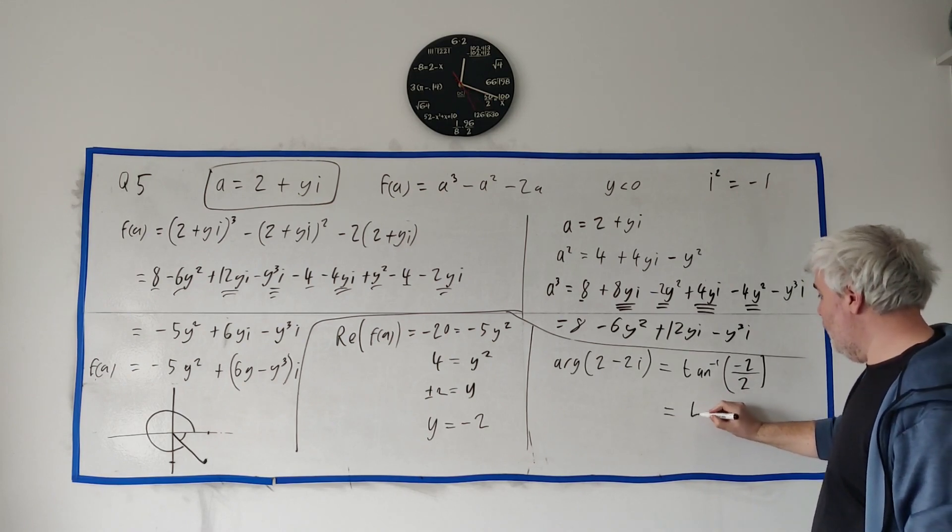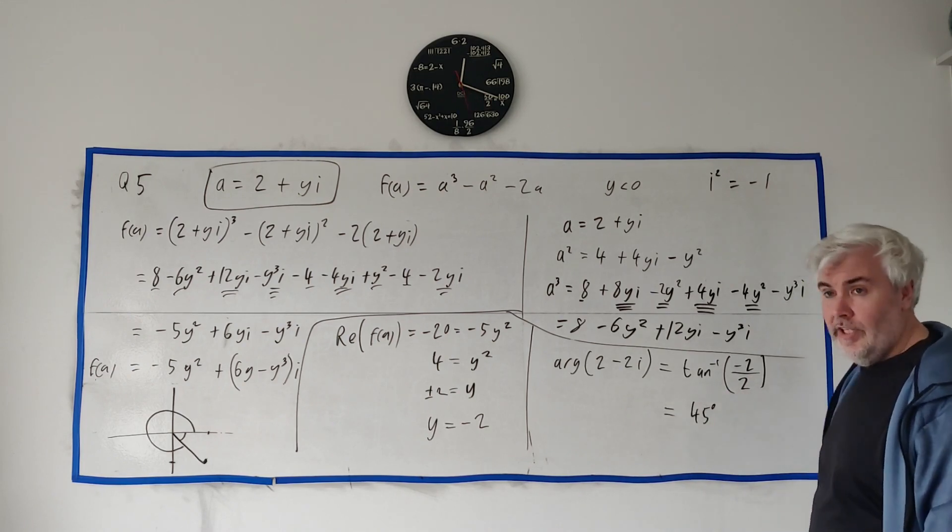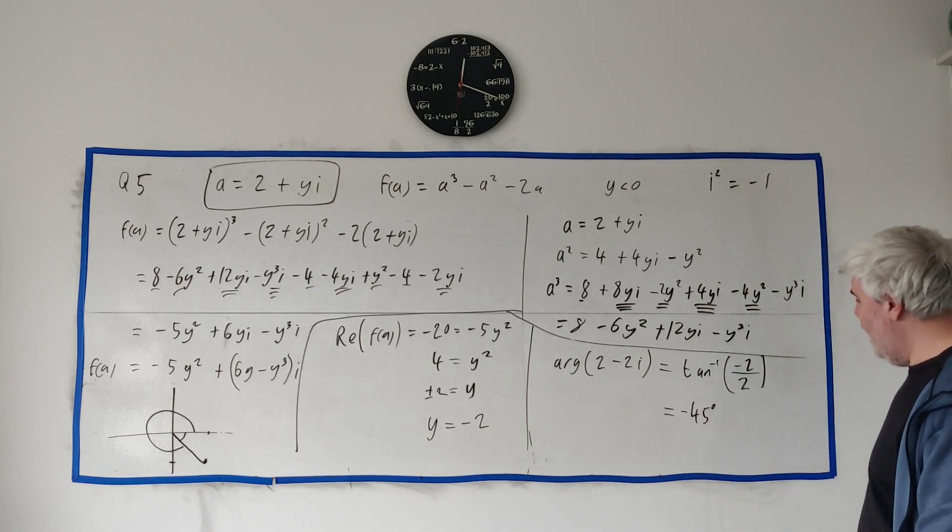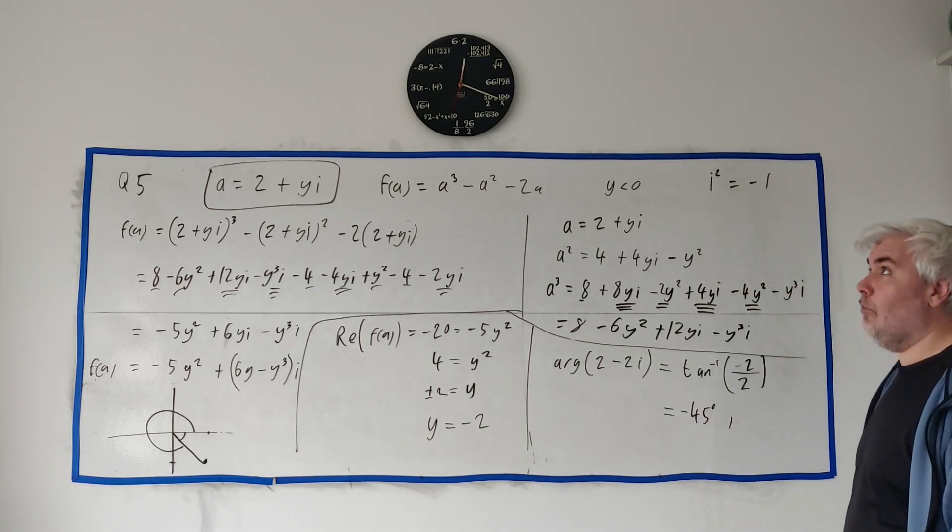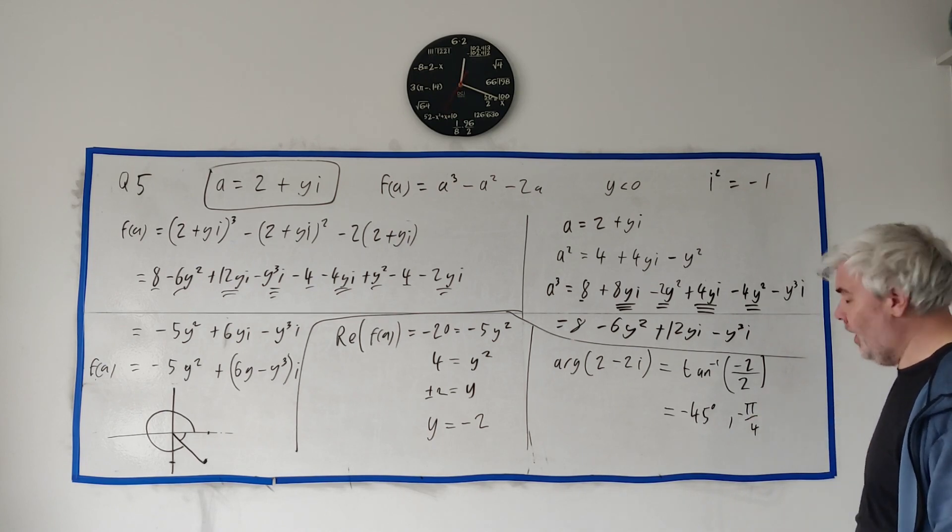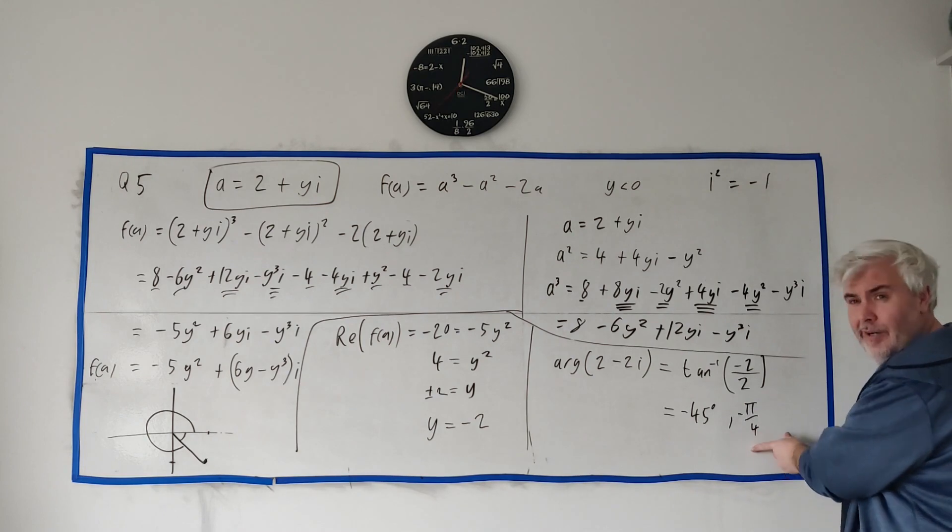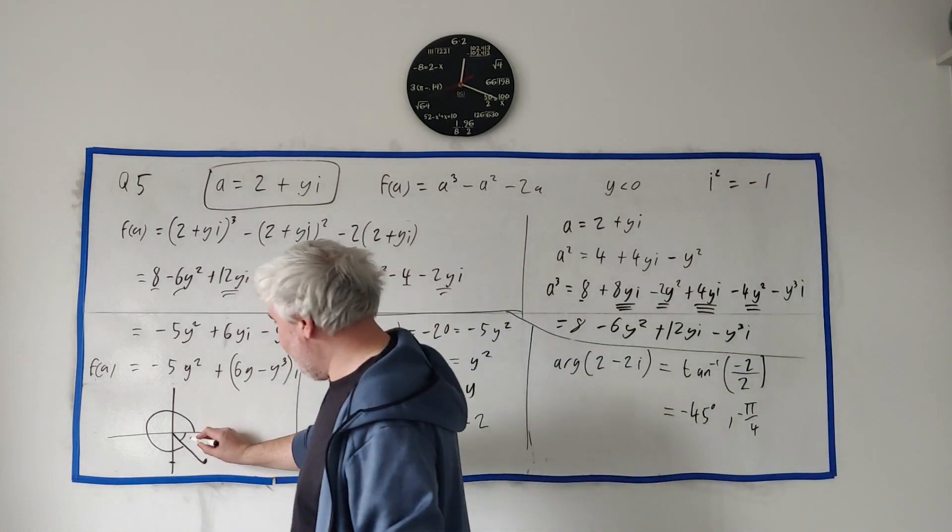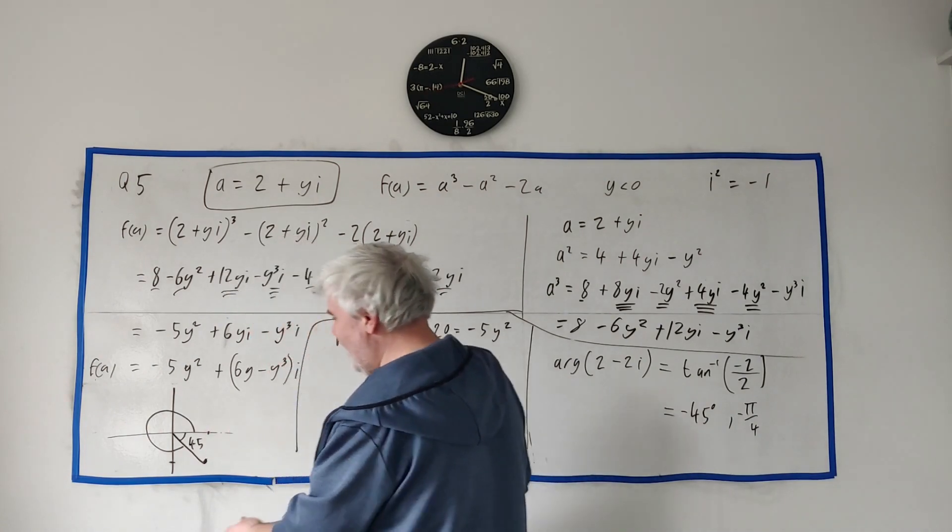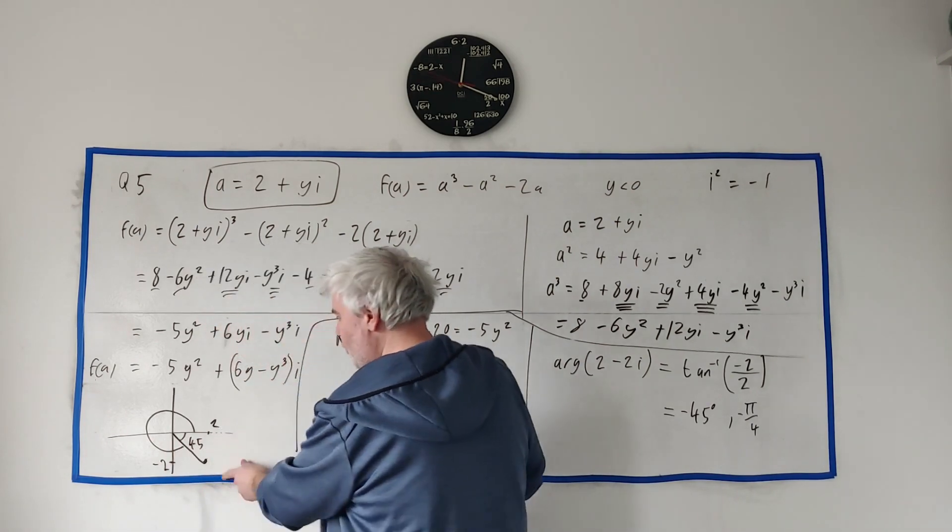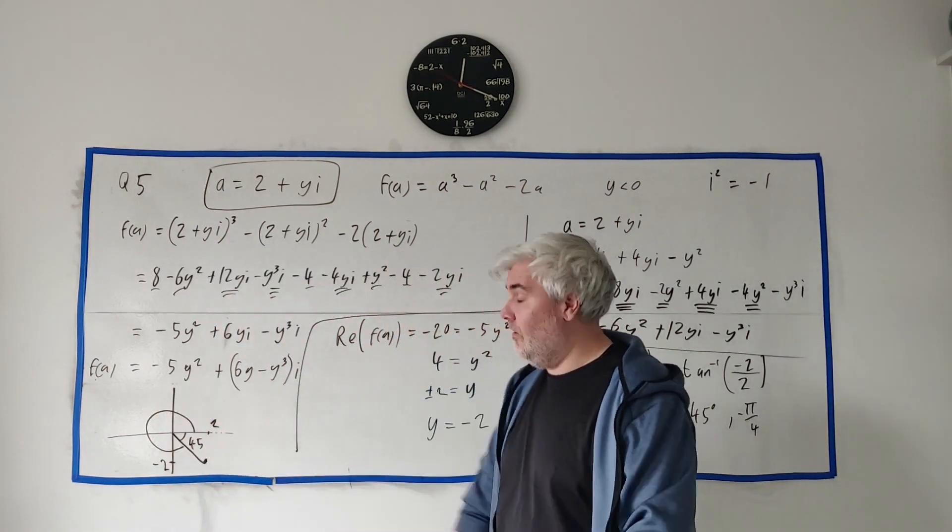That's the inverse tangent of minus 1. And that's just equal to minus 45 degrees. Or if your calculator is in radians, that would be minus pi over 4 or whatever number that comes out as. But as well, like I said, so that's minus 45. And we should be able to see that because it's 2, 2 minus 2. It's 2, 2. So this is 45 degree angle.